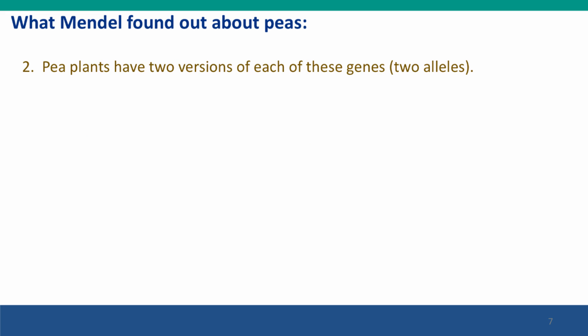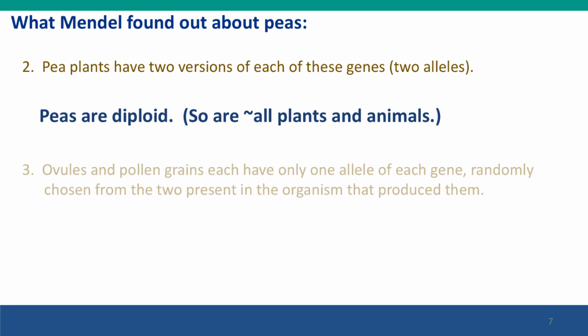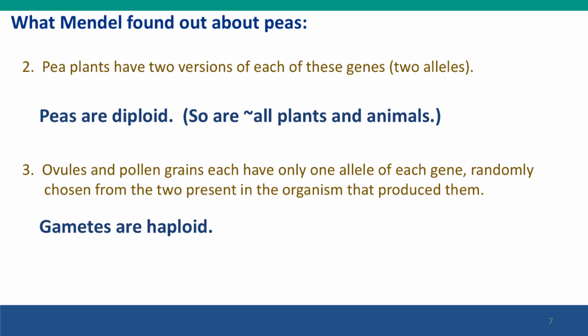He concluded that pea plants must have two versions of each of these factors — we would say they must have two alleles of each gene. And in doing this, he created the concept of diploidy. We now know that this is true for pretty much all plants and all animals, but until Mendel, nobody knew this. He found that the ovule and pollen grains must have only one version of each element — one allele of each gene — and that these are randomly chosen from the versions present in the parent organism. So he concluded that gametes are haploid. Again, a completely new concept.